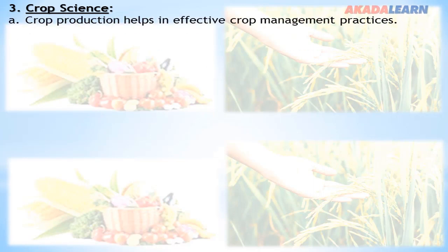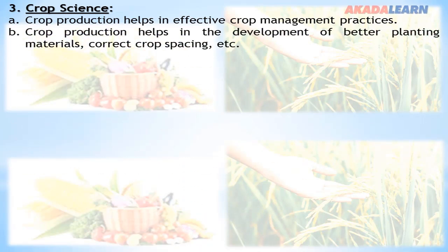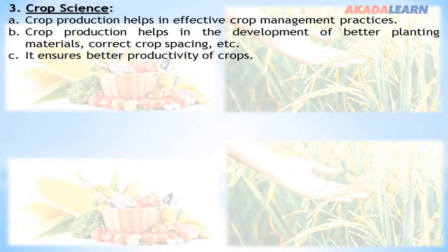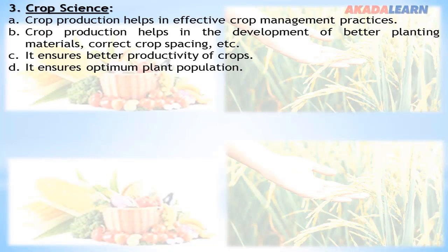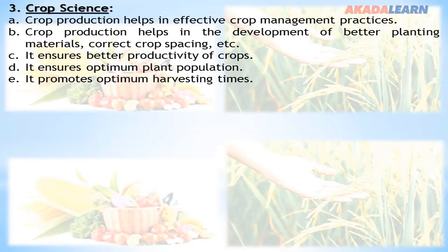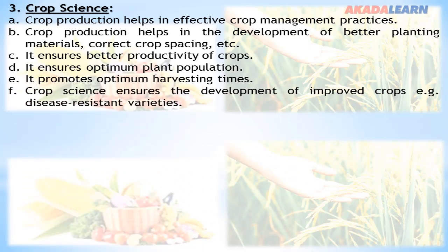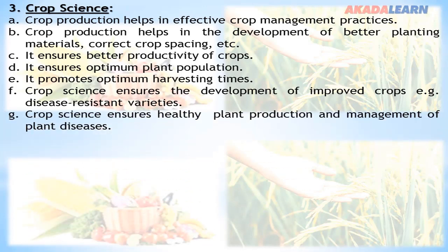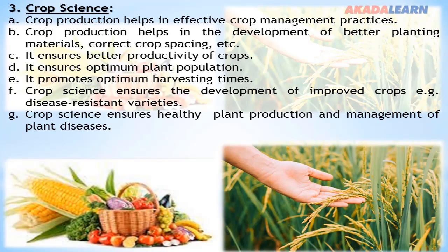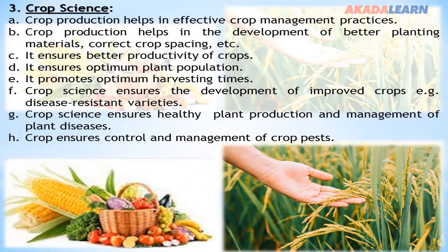Crop Science: Crop science helps in effective crop management and in the development of better planting materials. It ensures better productivity of crops and optimum plant population. It promotes optimal harvest times and ensures the development of improved crops, such as disease-resistant varieties. Crop science also ensures healthy plant production, management of plant diseases, and control and management of crop pests.